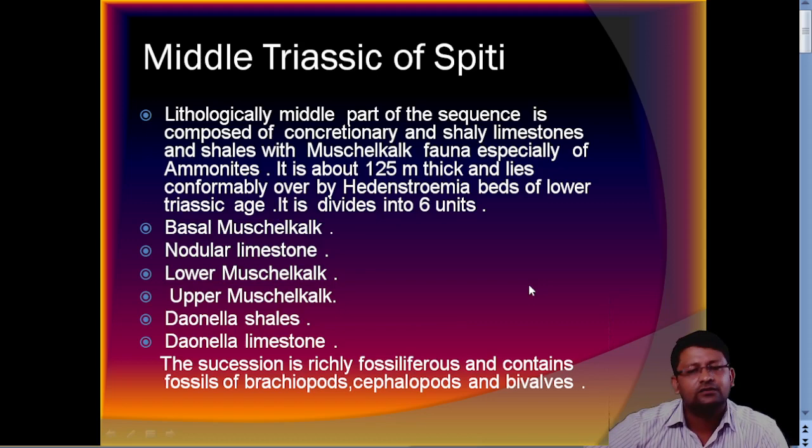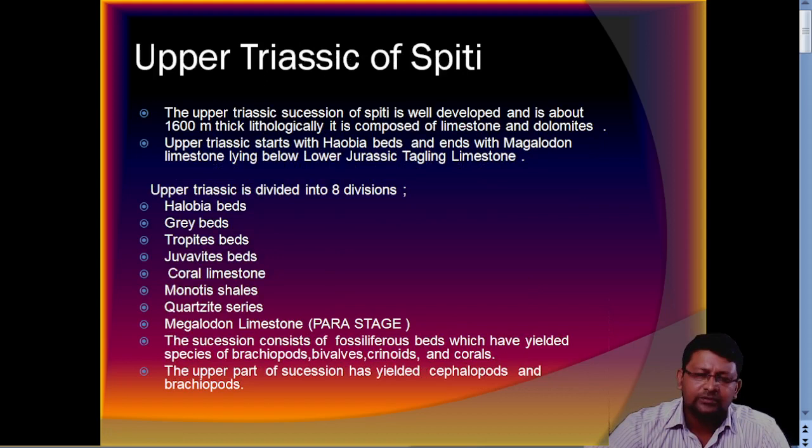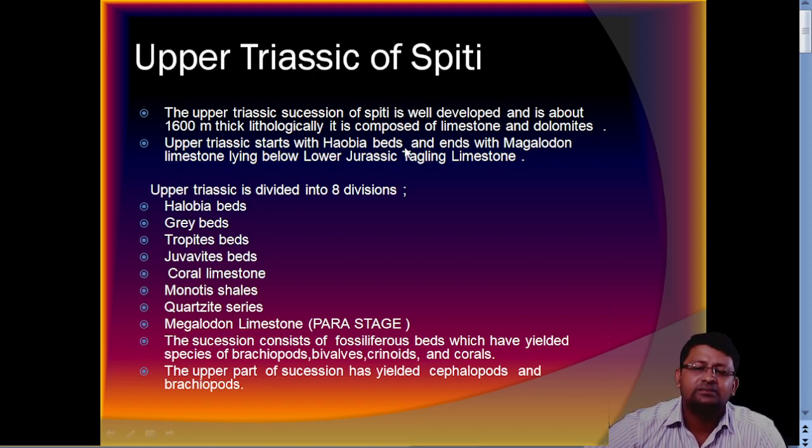Then we have the upper Triassic of Spiti. The upper Triassic of Spiti is overlaid by the middle Triassic; it is around 16 meters in thickness and is generally made up of limestone and dolomite. This is a sedimentary sequence. The upper Triassic starts with Halobia beds and ends with Megalodon.